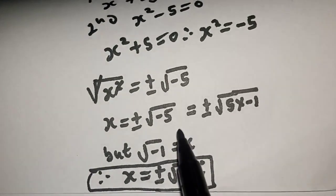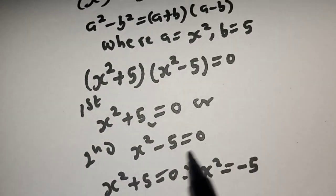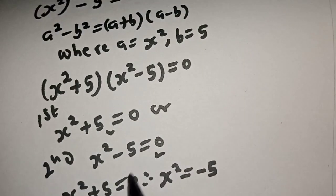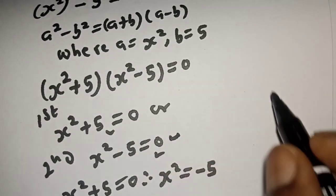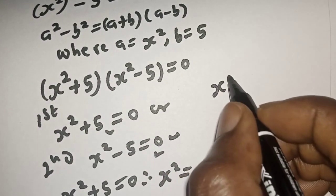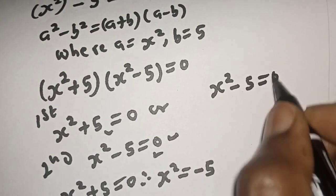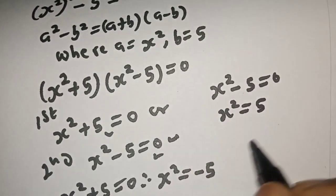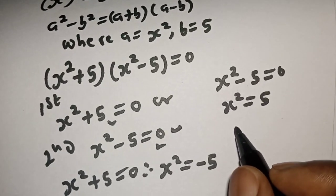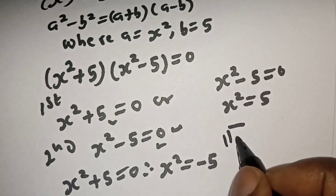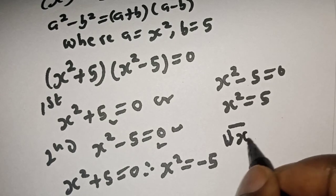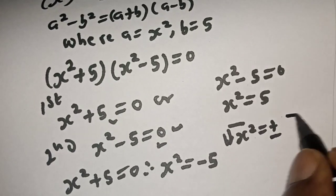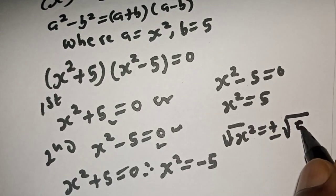From the second case, s squared minus 5 is equal to 0, so s squared is equal to 5. Taking the square root of both sides, square root of s squared is equal to plus or minus square root of 5.